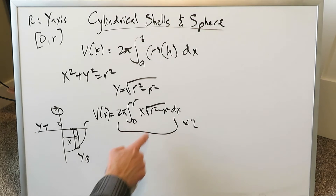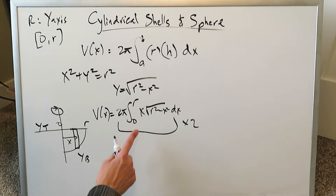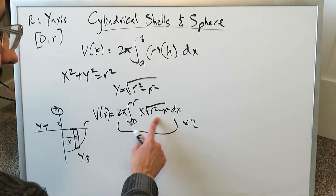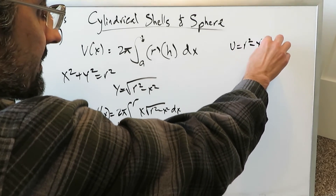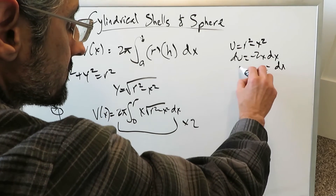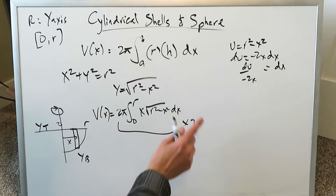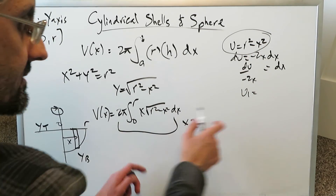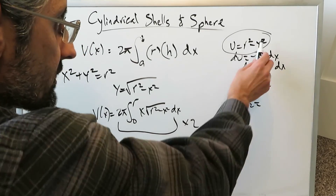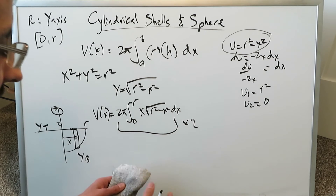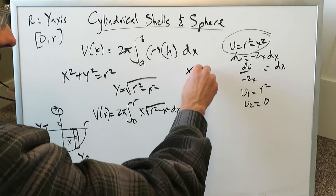To integrate 2π ∫₀ʳ x√(r² − x²) dx, we use polynomial substitution: let u = r² − x², then du = −2x dx, so dx = du / (−2x). Since it's a definite integral, the limits change: when x = 0, u = r²; when x = r, u = 0. We move the factor of 2 (for the full sphere) aside to remember at the end.